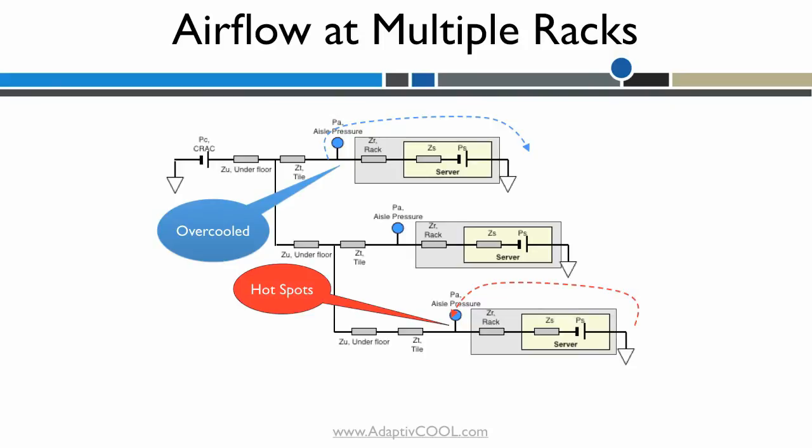To address a hot spot at the third rack requires increasing air flow by, say 20%, from 1000 CFM to 1200 CFM. This means the CRAC fan speed needs to be increased.